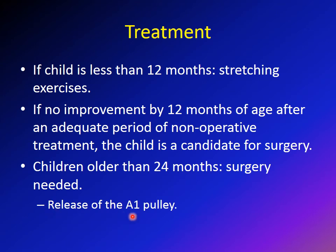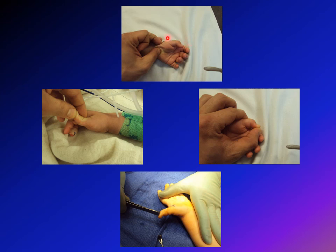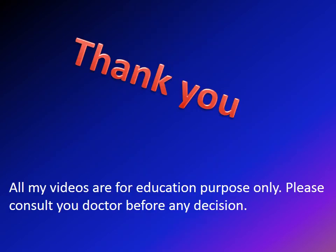The surgery is a release of the A1 pulley. There is no need to excise the nodule because it will spontaneously resolve after release of the A1 pulley. As an example: this child has a congenital trigger thumb — the other side can be fully extended, but the affected side has a flexion contracture. The surgery involves a small incision over the A1 pulley and its release, after which the thumb was fully extended.